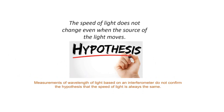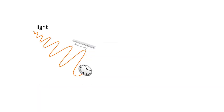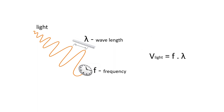Measurements of wavelength of light based on an interferometer do not confirm the hypothesis that the speed of light is always the same. A large part of physics is based on the speed of light from a moving light source. Consequently, the speed of light from a moving light source should be unambiguously measured.